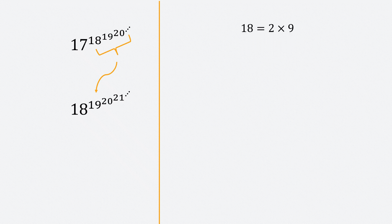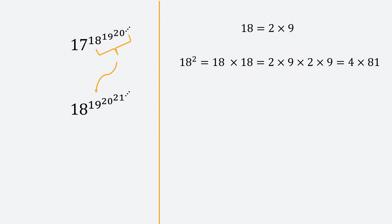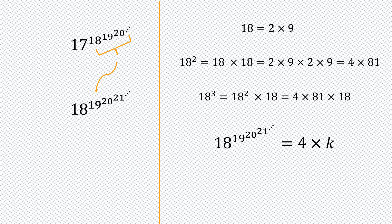So let's check if 18 to the power 19 to the power 20 to the power 21 is a multiple of 4. We know 18 = 2 × 9. Then 18 squared = 2×9 × 2×9 = 4 × 81, so 18 squared is a multiple of 4. And 18 cubed = 18 squared × 18 = (4 × 81) × 18, so 18 cubed is also a multiple of 4. This continues — all integer powers of 18 except the first are multiples of 4. Therefore, 18 to the power (19 to the power 20 to the power 21) equals 4 times some integer — it is a multiple of 4.